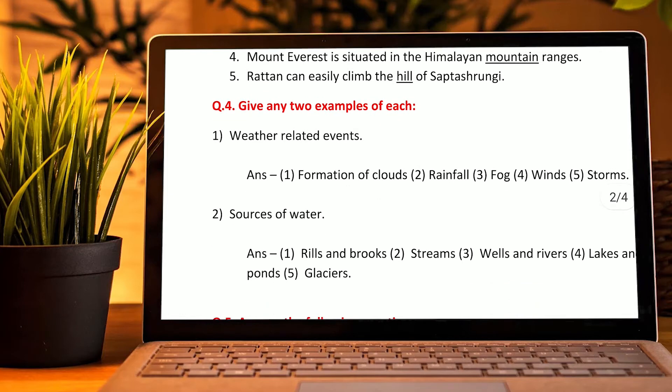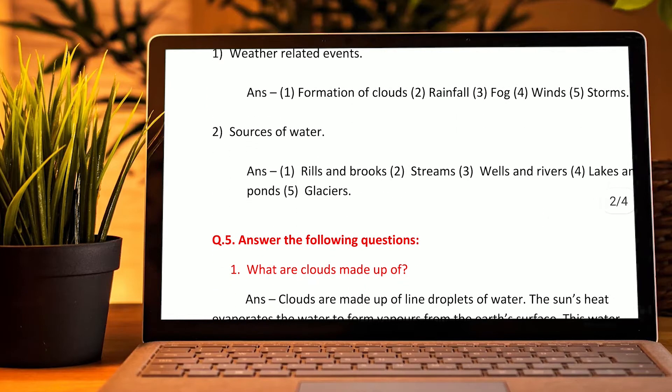Fourth: give any two examples of each. Weather-related events: a) formation of clouds, b) rainfall, c) fog, d) winds, e) storm. Sources of water: rills and brooks, streams, wells and rivers, lakes and ponds, glaciers.